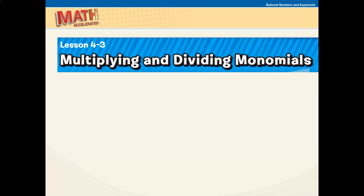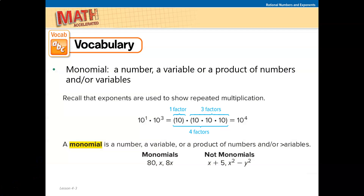Chapter 4, Lesson 3: Multiplying and Dividing Monomials. A monomial is a number, a variable, or a product of numbers and/or variables. For example, 80 is a monomial, x is a monomial, and 8x is a monomial. X plus 5 would not be a monomial because it is not a product. X minus y squared would not be a monomial because it involves subtraction, and x plus 5 involves addition.